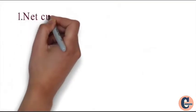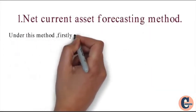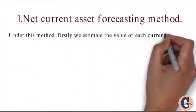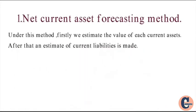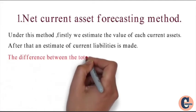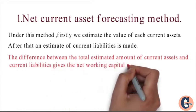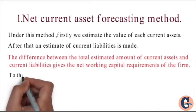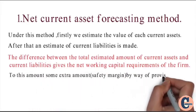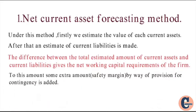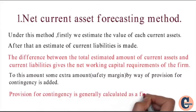First method: net current asset forecasting method. Under this method, firstly we estimate the value of each current asset. After that, an estimate of current liabilities is made. The difference between the total estimated amount of current assets and current liabilities gives the net working capital requirements of the firm. To this amount, some extra amount — a safety margin — by way of provision for contingency is added. Provision for contingency is generally calculated as a percentage of working capital.